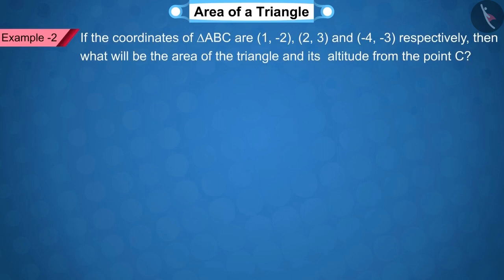Let's see another example. If the coordinates of triangle ABC are (1,-2), (2,3) and (-4,-3) respectively, then what will be the area of the triangle and its altitude from the point C?